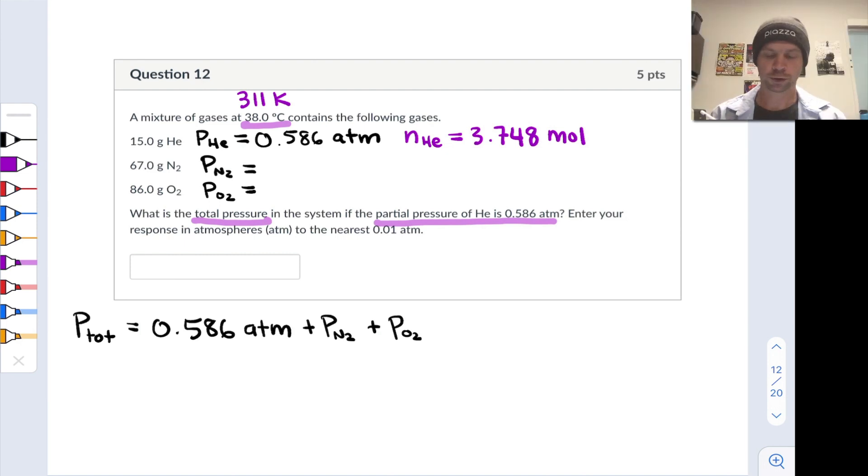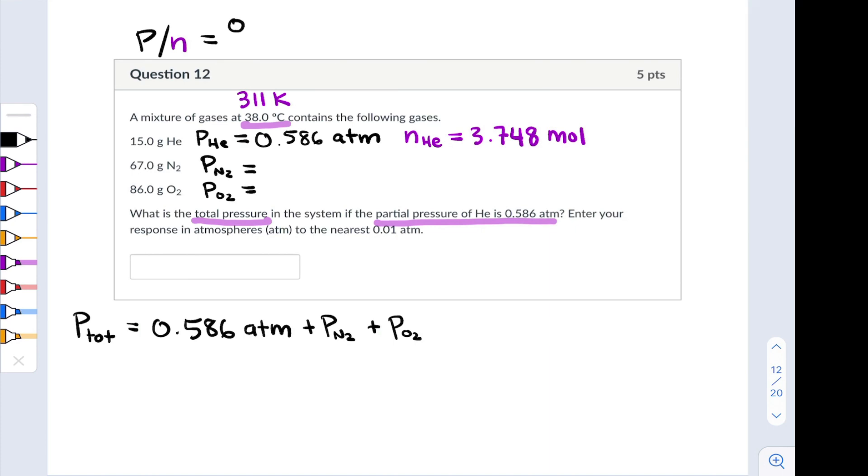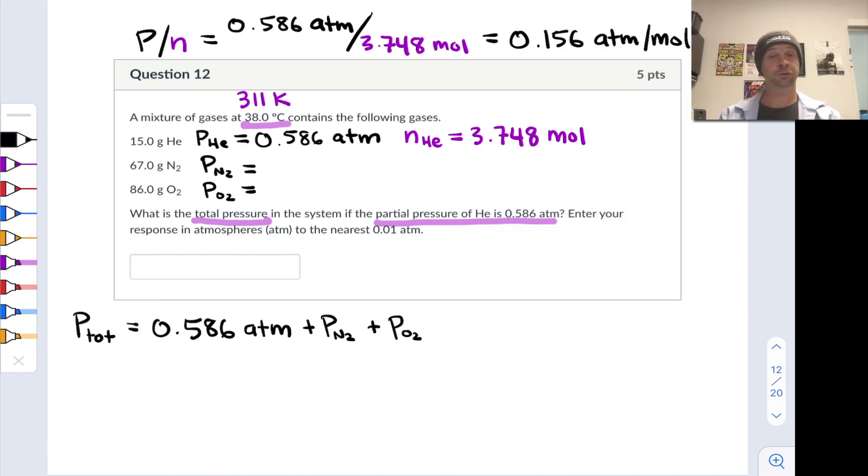Now I want to calculate this ratio, partial pressure divided by the number of moles, which is constant for all the gases. Now that we know the moles of helium, we can calculate this ratio: it's 0.586 atmospheres for every 3.748 moles of helium. This comes out to 0.156 atmospheres per mole.